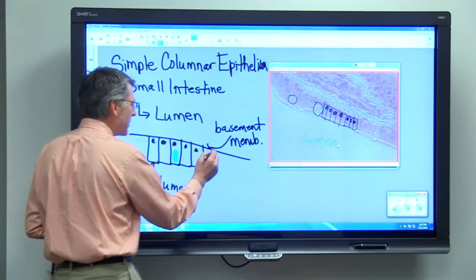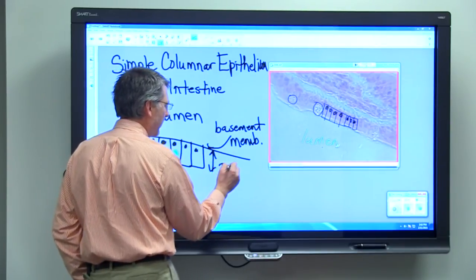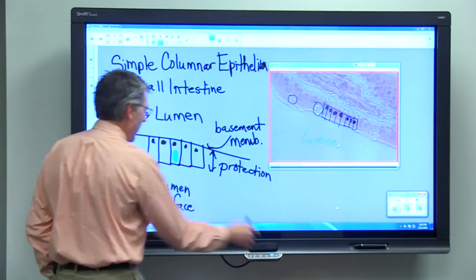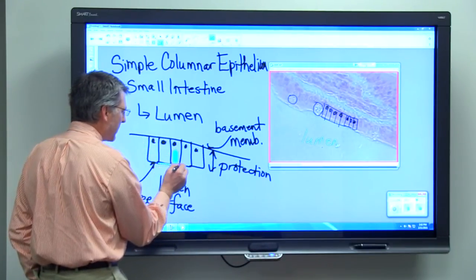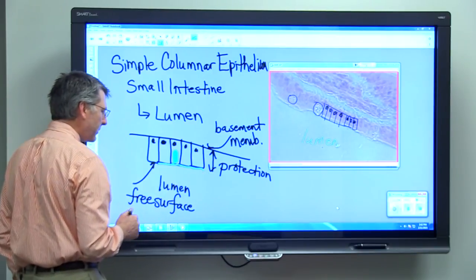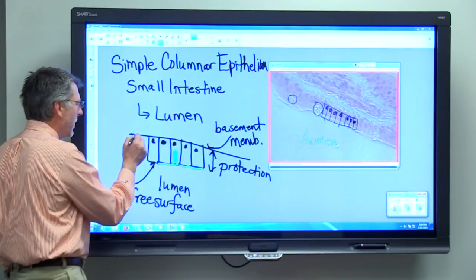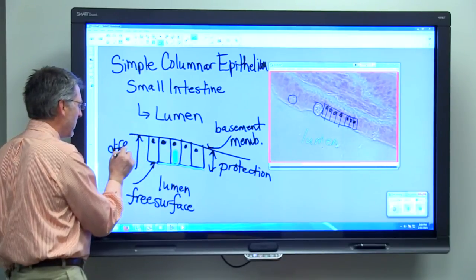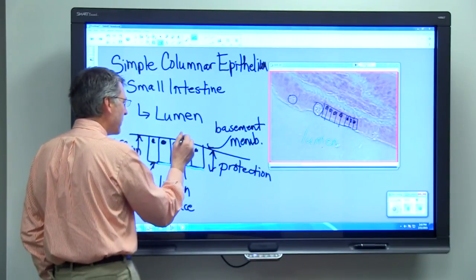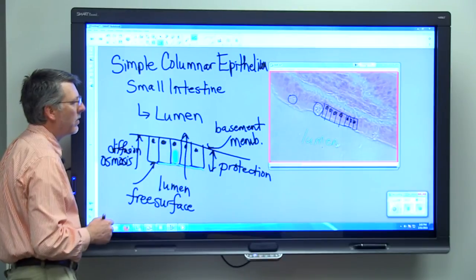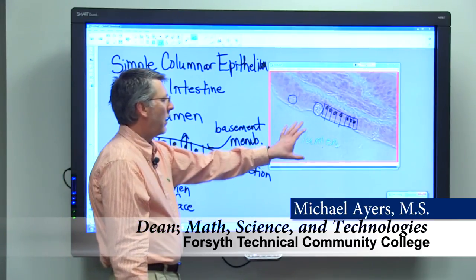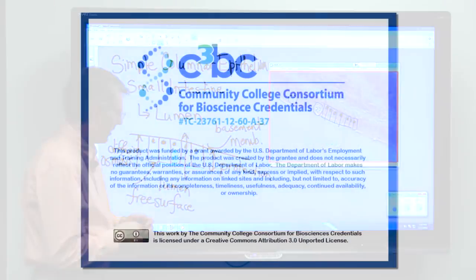This tissue has several functions. One is protection. When we look at this as a thick cell, that thickness leads to some protection. We also have secretion as the goblet cells secrete this mucus, which helps to protect the surface of the cell as substances slide across. It's also involved with diffusion and osmosis as nutrients and water will move across this membrane and ultimately into the bloodstream. So simple columnar epithelium - we've looked at a micrograph of the small intestine to demonstrate this tissue.